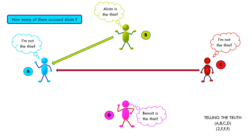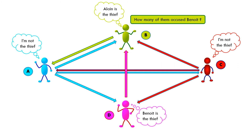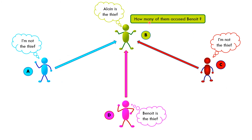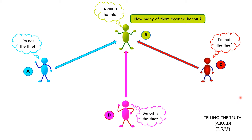For Binwa, we apply the same process — eliminating arrows not directly related to Binwa and the arrow from Binwa himself. After eliminating, we have three arrows directly pointed at Binwa. So three people are accusing Binwa for the theft.